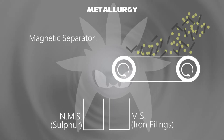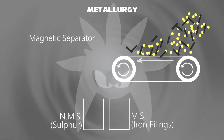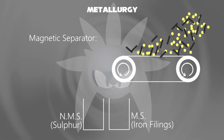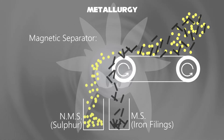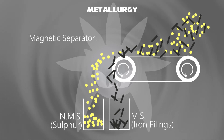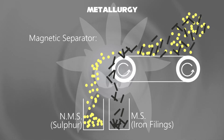Two mixtures — sulfur and iron filings — are dumped onto the conveyor belt. The conveyor belt moves in one direction to let them separately dump into two different containers. One substance which normally dumps is non-magnetic, that is sulfur. And the other, iron filings, dumps magnetically into another container.